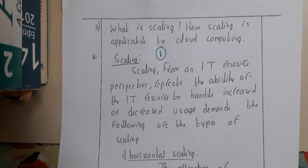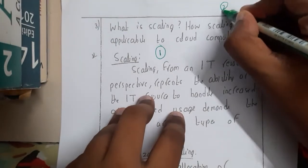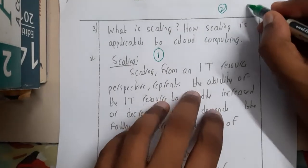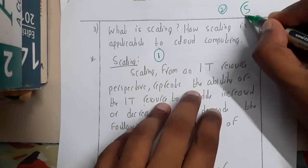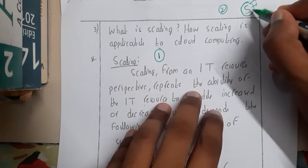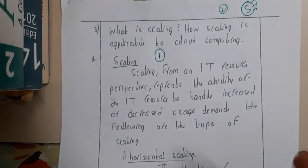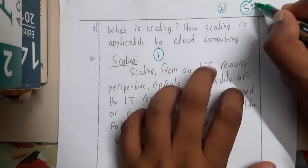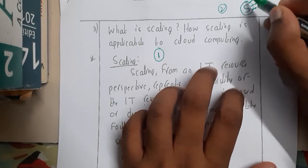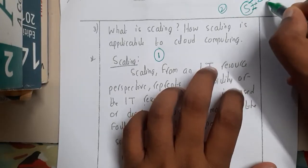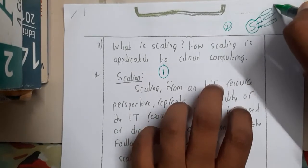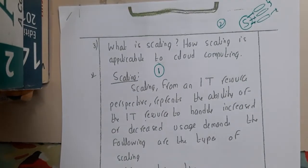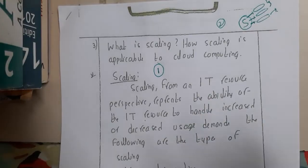We are back with our next lecture. Let us start the second unit in cloud computing. The first topic in the second unit is about scaling. Scaling is of three types: horizontal scaling, vertical scaling, and auto scaling. We'll be discussing horizontal and vertical in this lecture, and in the next lecture we'll discuss auto scaling.